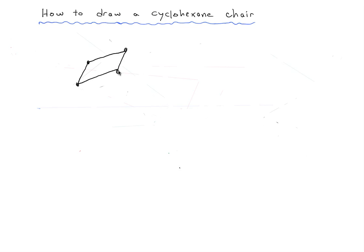If you start off by drawing the parallelogram it's usually a good place to start. Once you've drawn the parallelogram, the next thing to do is you want to draw a flap coming down like that. You notice that here we've got this kind of nice concave angle between our parallelogram and the flap — you definitely want to have a measurable angle between the flap and the parallelogram. And the same thing for the upper flap; you also want to have a nice concave angle on the inside right there as well. So just by drawing the parallelogram and these two flaps, we've already drawn the outline of our cyclohexane chair.